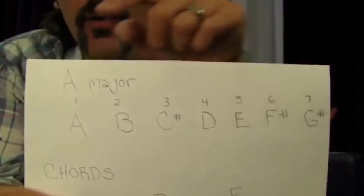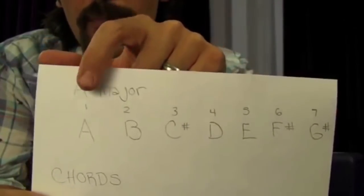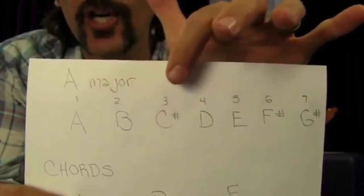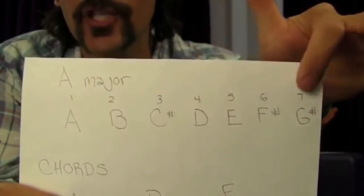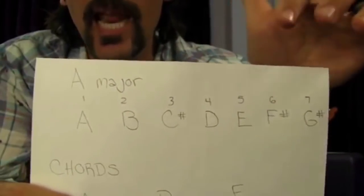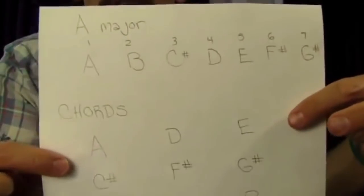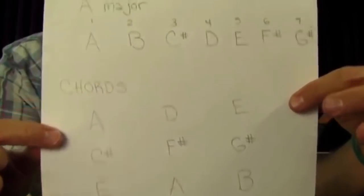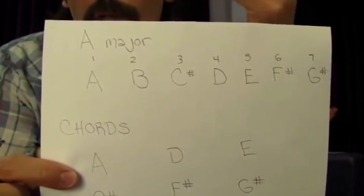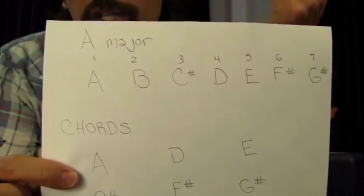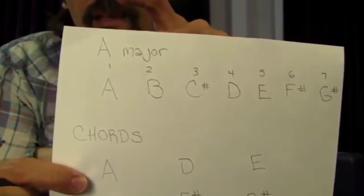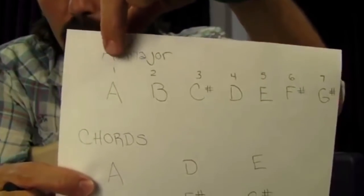In an A major scale, these are the degrees of the chord. We have A, B, C sharp, D, E, F sharp, G sharp — those are the notes of the A major scale. To find the target notes per given chord, the formula to make a chord is: every major or minor triad needs a root, a third, and a fifth.